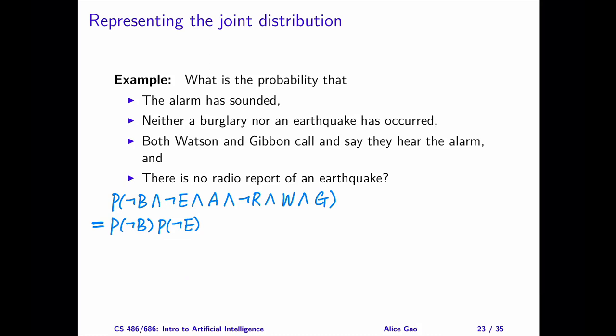Next, we have probability of A, given ¬B and ¬E, since alarm depends on B and E. After that, we have probability of ¬R, given ¬E, since radio depends on earthquake.